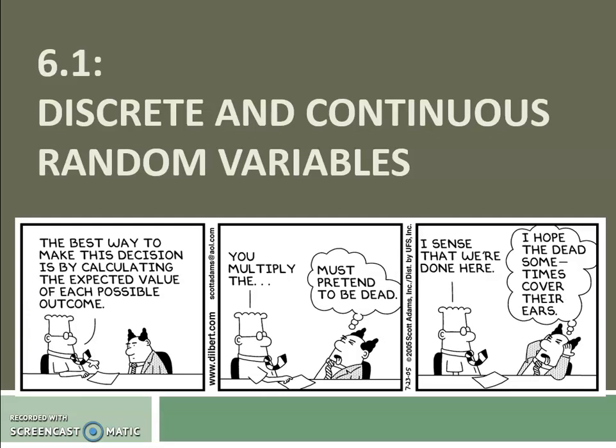Hey everyone, we are starting chapter 6. This first section of chapter 6 is all about discrete and continuous random variables. Other things we'll learn about in this chapter is how to combine random variables, as well as binomial and geometric probability distributions.